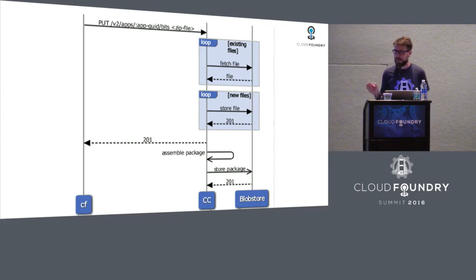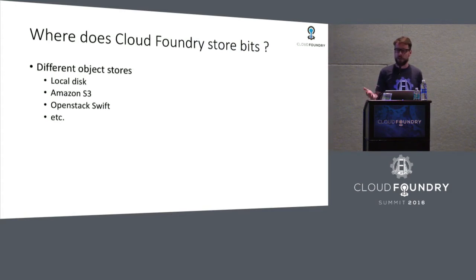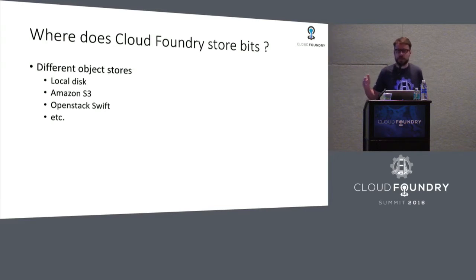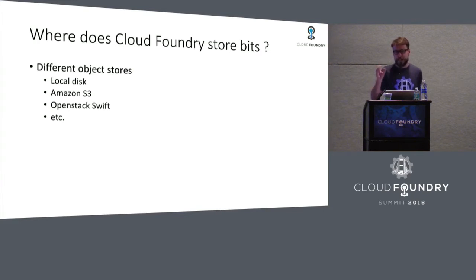So now you have an idea of one particular example of where we use bits, and this new BitService deals with these bits. The blobstore component on the right side highly depends on your deployment of Cloud Foundry. You might either have a BOSH job — a VM in your deployment — where you store files on local disk. While that is feasible, it's maybe not the most scalable solution. That's why more often you'll see people use external object stores like AWS S3 or OpenStack Swift. We can support all these options because we use a library called Fog, which is an abstraction layer that abstracts the APIs for all these blobstores.